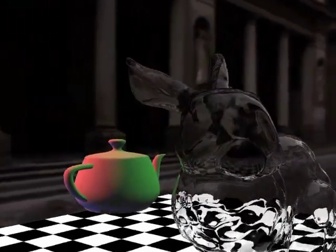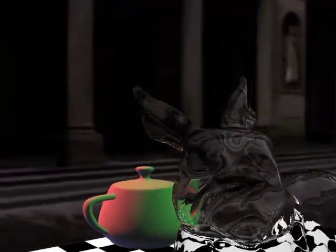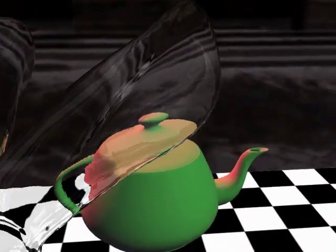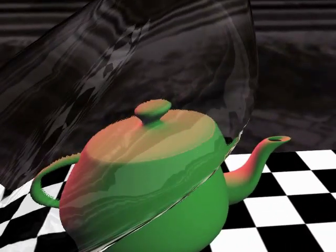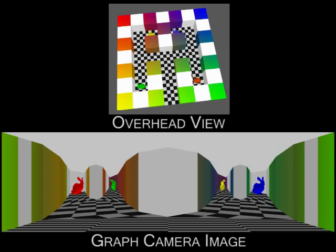A similar occlusion camera depth image can also be used to render refractions. Whereas the occlusion camera provides powerful approximations of a single object, we construct environment approximations using a graph camera.